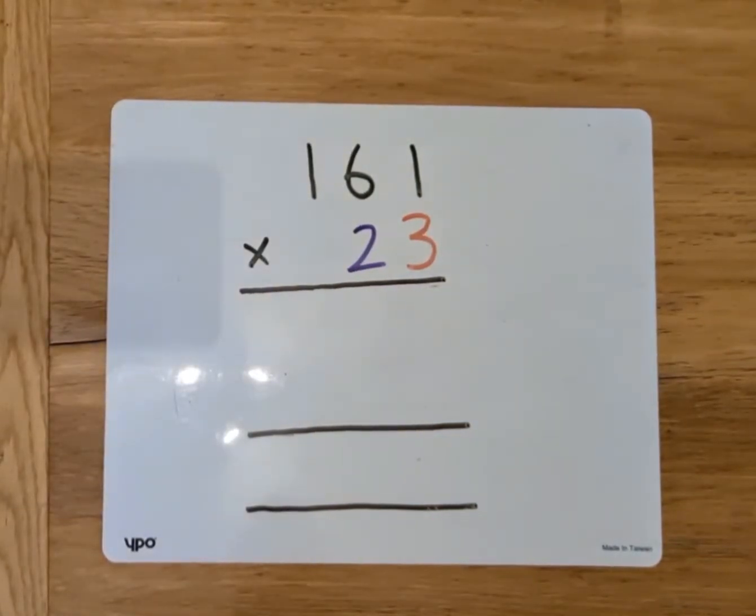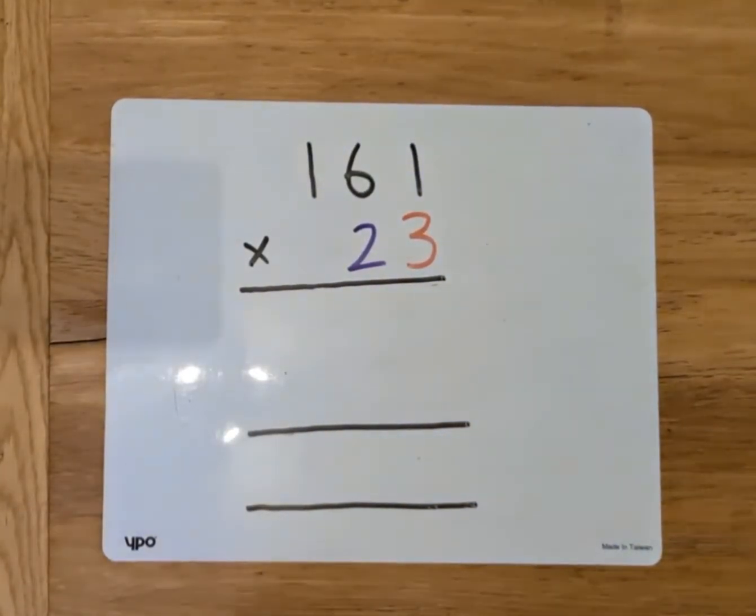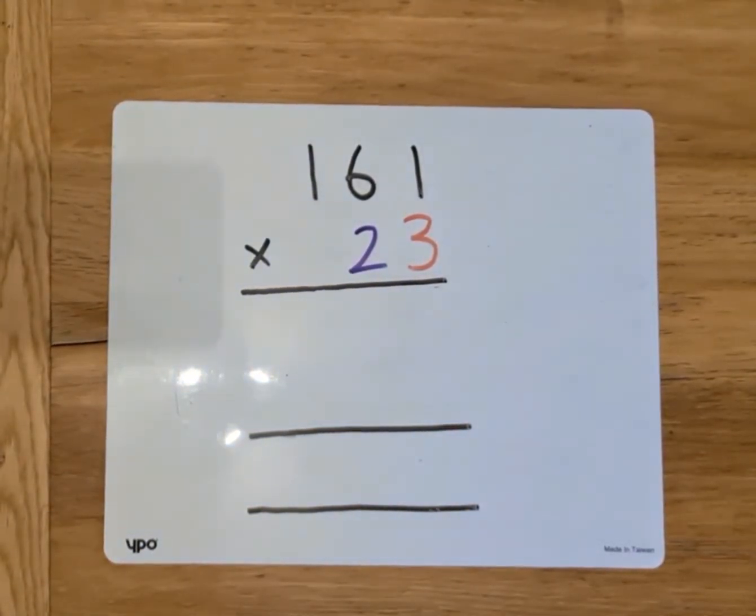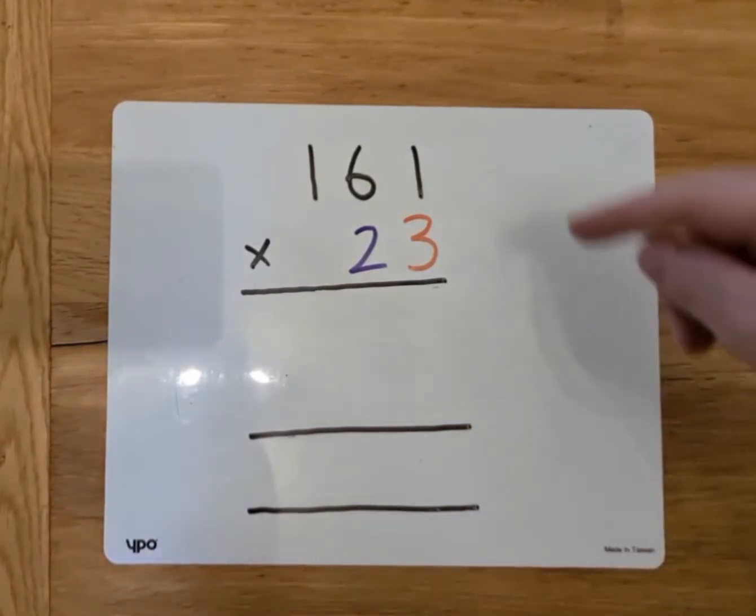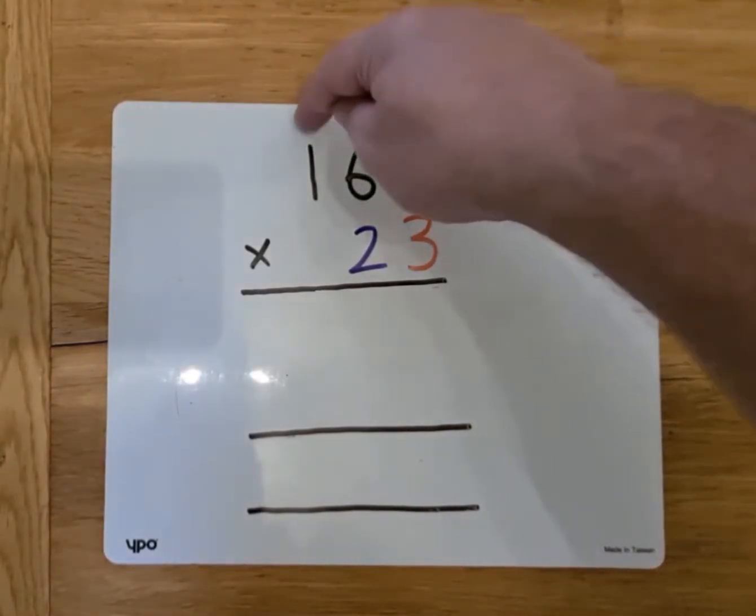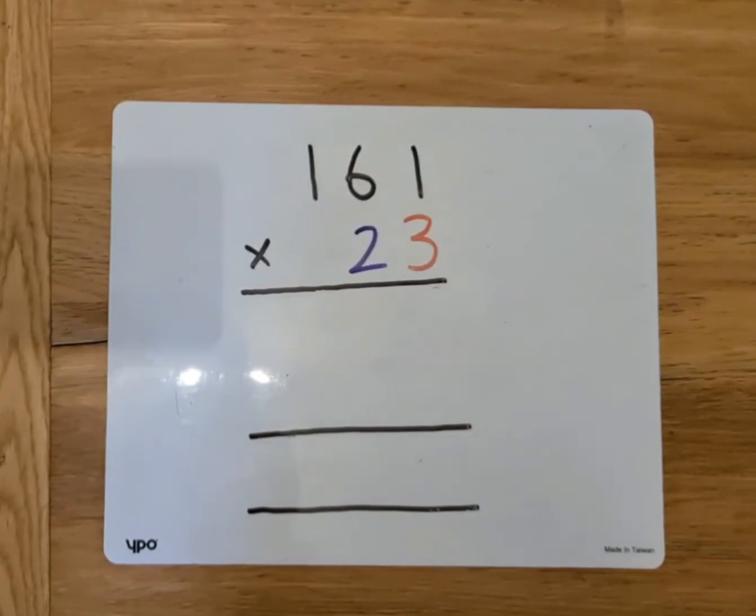Okay, so we've looked at multiplying two-digit numbers by two-digit numbers. We're now going to take that one step further and multiply three digits by two digits. The good news here is that the method stays the same, the way we work it out, the way we lay it out, everything stays the same. The only difference is that instead of stopping after the tens, we're going to keep multiplying until we get to the hundreds.